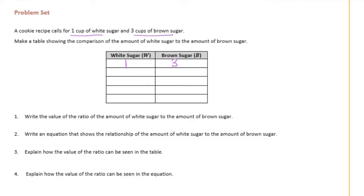So one to three. If we had two, that would be six cups of brown sugar — we're multiplying by three. Three would be nine. Four times three is twelve. Five times three is fifteen.